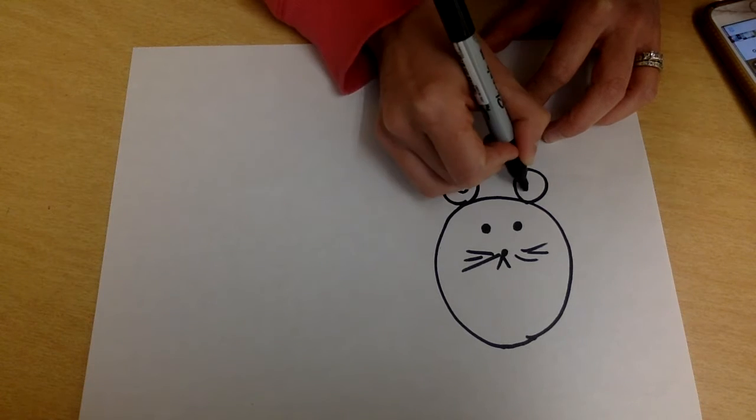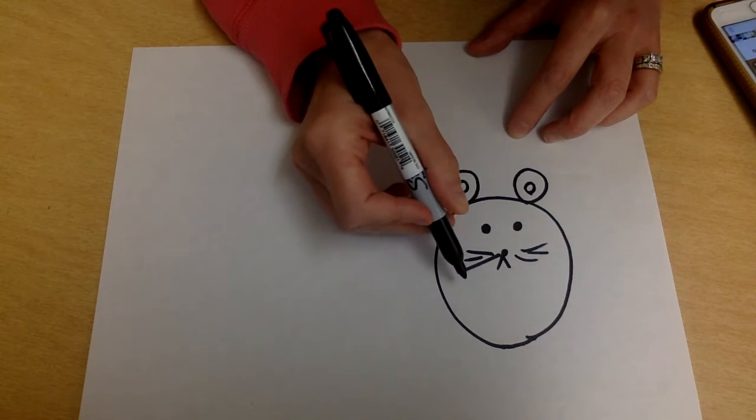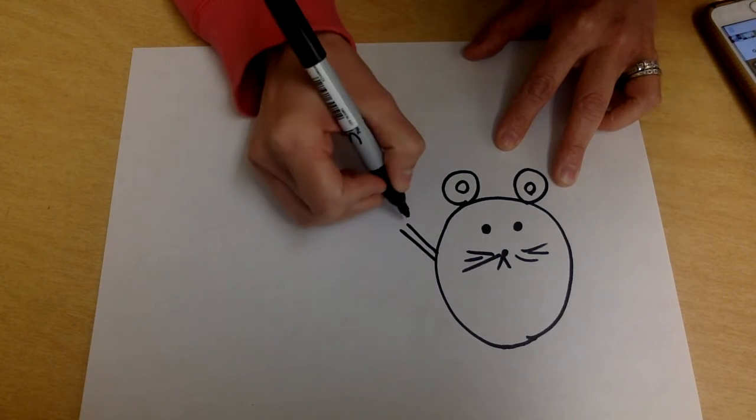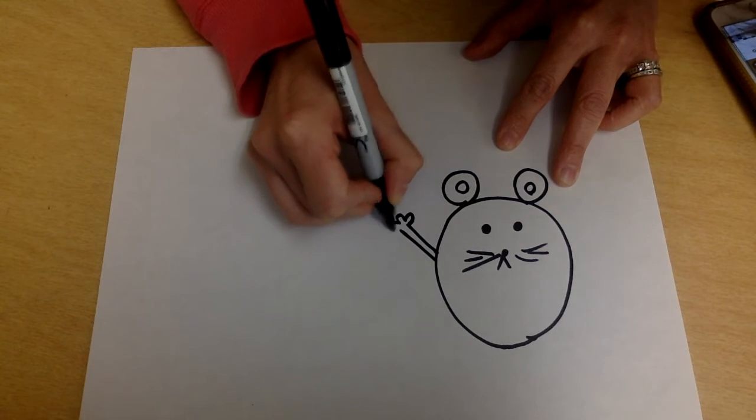Okay, we can make the inside of the ears and then let's go ahead and make the arms. Line, line, and these are a little cartoony mice so you can do as many fingers as you want.